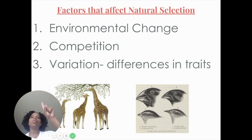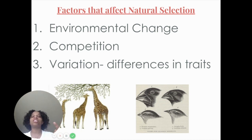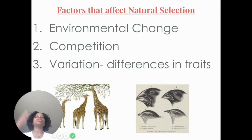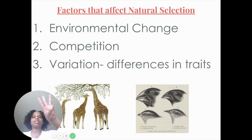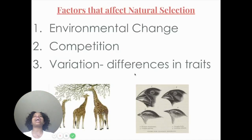There are some factors that affect natural selection. Number one: environmental change — if the environment around you is changing, this may cause adaptation to happen within organisms. Number two: competition — if we're all in the same environment with a limited amount of resources, there will be competition. Number three: variation, or differences in traits — going back to genetics, it's the reason you don't look identical to your mom or your father.